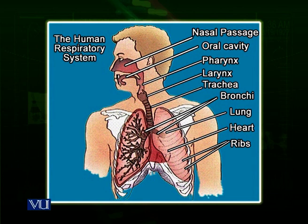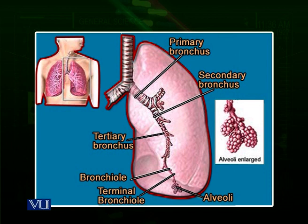Air passageways in human beings start from the nostrils, then comes the nasal cavity, then comes a muscular tube called the pharynx. Then comes another small tube, the larynx, which leads into the trachea. Trachea leads into bronchi. Bronchi leads into bronchioles. And then comes the alveoli, which are the smallest parts of the respiratory tract, present inside the lungs. From the bronchi, the passageway enters the lungs.